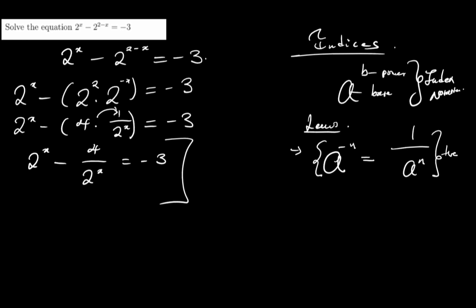In math, whenever you come across such a condition, I always make it make more sense. I'll let this thing that doesn't make sense — 2 to the x — be equal to any letter of my choice other than x. Most books will use p, others m or n; in my case I will use y, because why not. So wherever I have 2 to the power x, I will put y. This gives me y minus 4 over y being equal to negative 3.